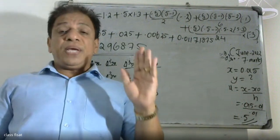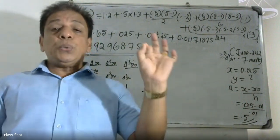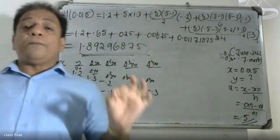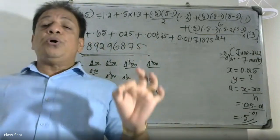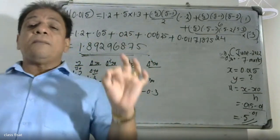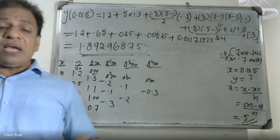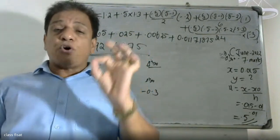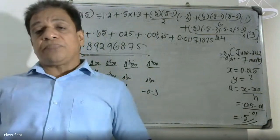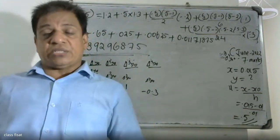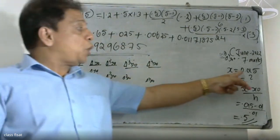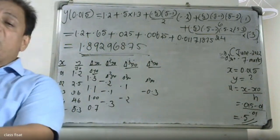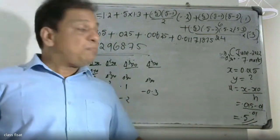To recap: Newton's forward interpolation formula is y(x) = y0 + u·Δy0 + u(u−1)/2!·Δ²y0 + u(u−1)(u−2)/3!·Δ³y0 + u(u−1)(u−2)(u−3)/4!·Δ⁴y0. u = (x − x0)/h, where x = 0.015 and x0 = 0.01, giving u = 0.5.